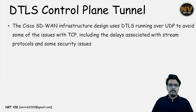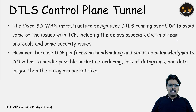Cisco SD-WAN infrastructure by default uses DTLS-based tunnels between the controllers and from the branch SD-WAN edge router to the controller. The DTLS tunnel resides on top of UDP, which helps avoid some of the issues with TCP-like delays. The downside of UDP is that it doesn't perform handshaking or any acknowledgement.